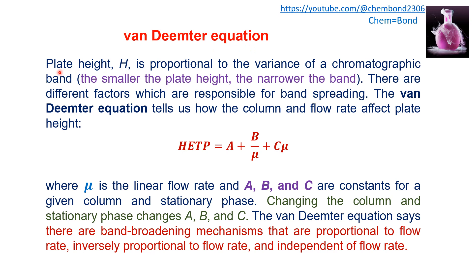In the Van Deemter equation, the plate height is proportional to the variance of the chromatographic band — the smaller the plate height, the narrower the band, meaning more theoretical plates. The Van Deemter equation tells us how the column and flow rate affect the plate height. It states: height equivalent of a theoretical plate (H) = A + B/μ + Cμ, where μ is the linear flow rate and A, B, and C are constants for a given column and stationary phase.